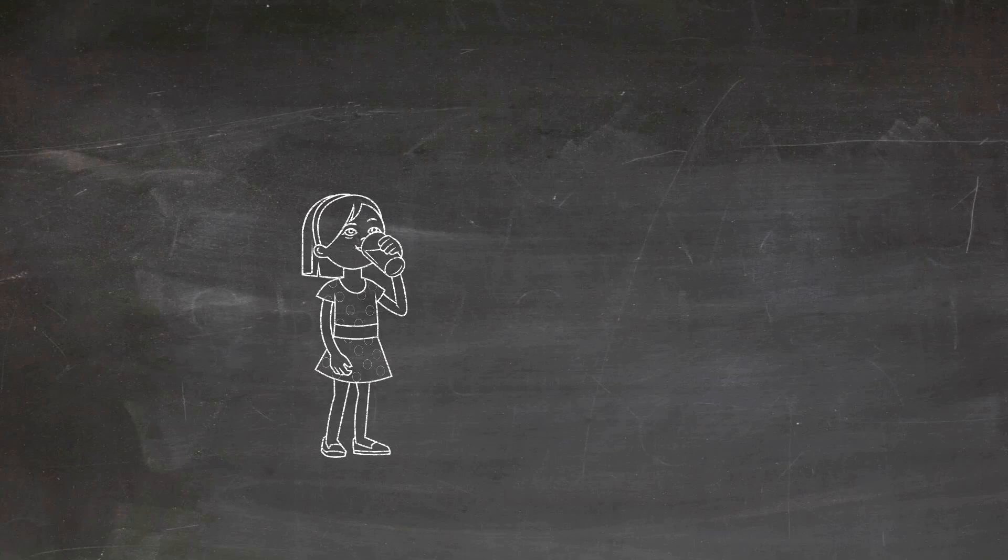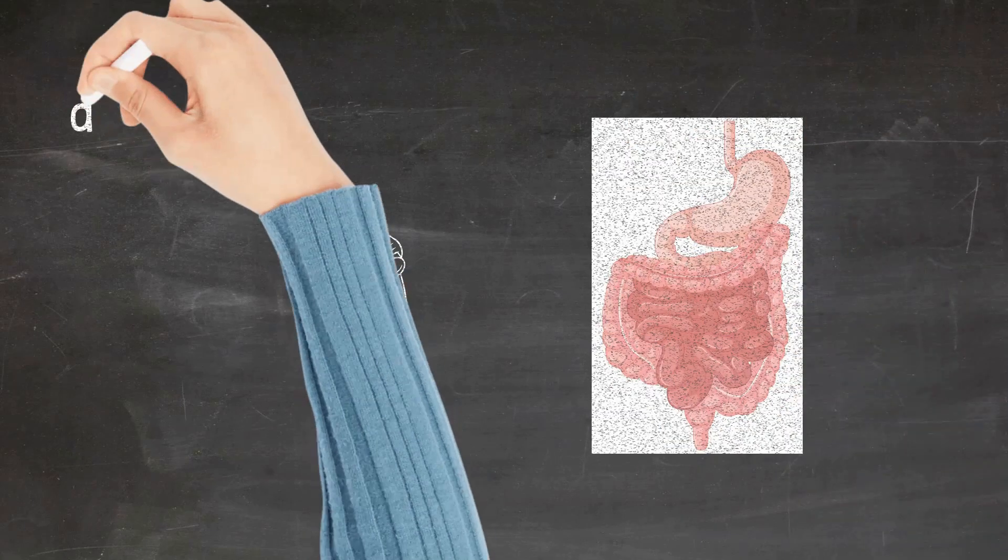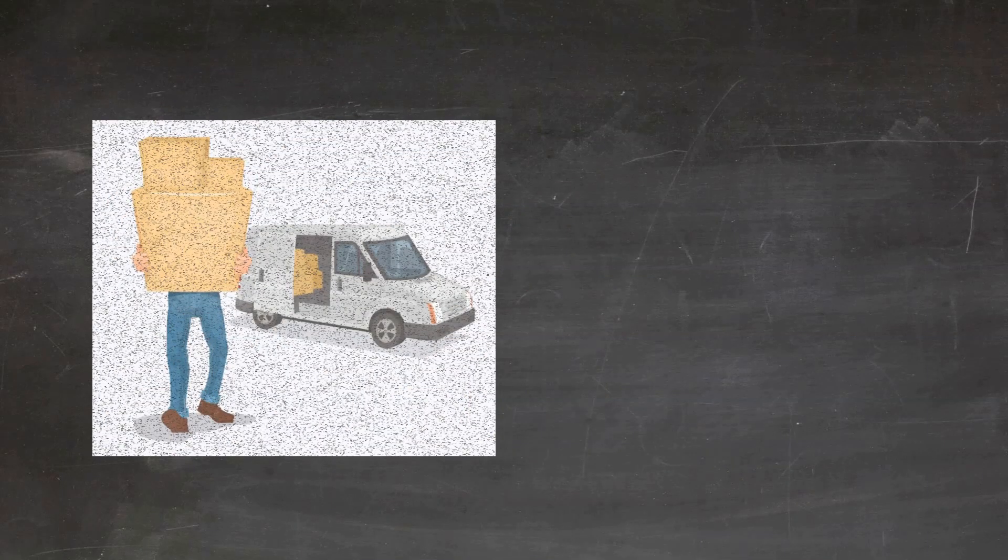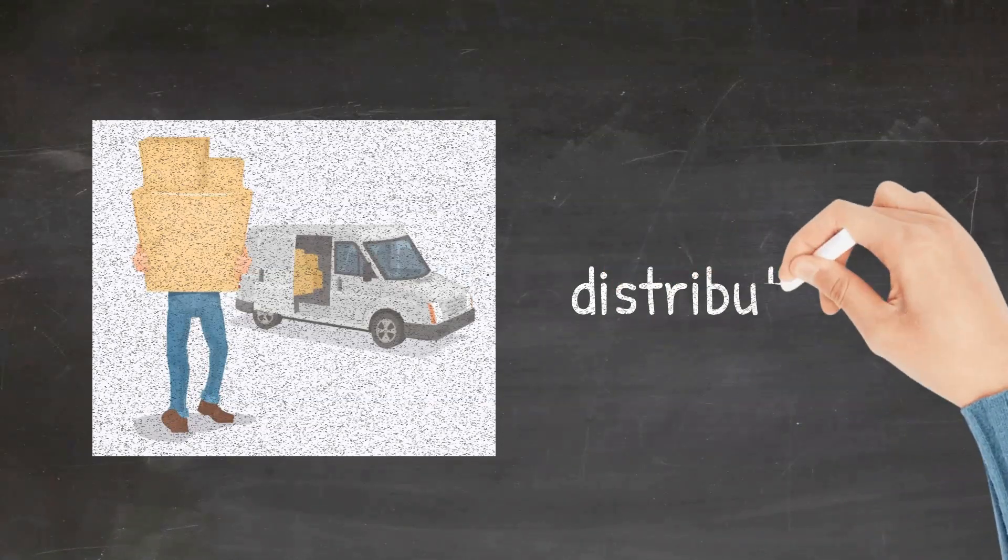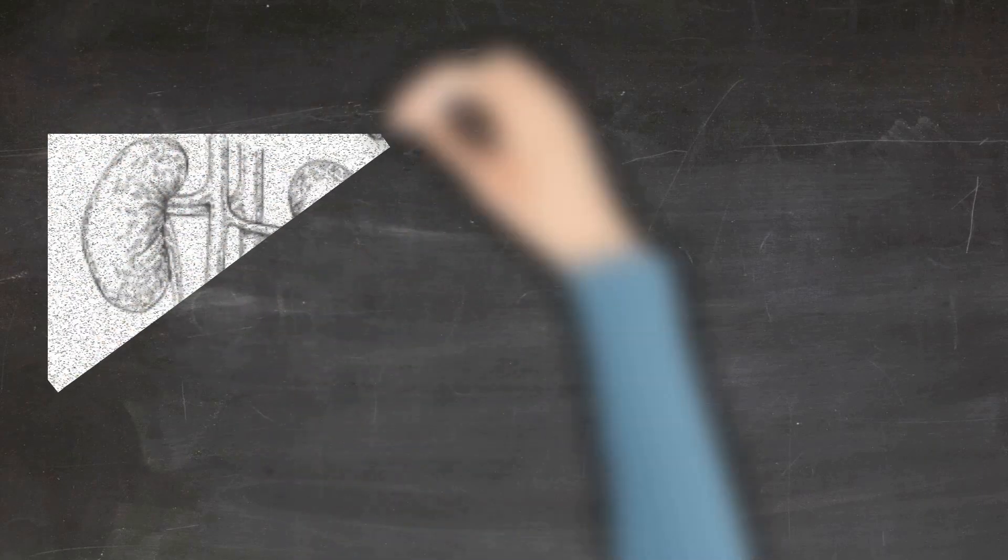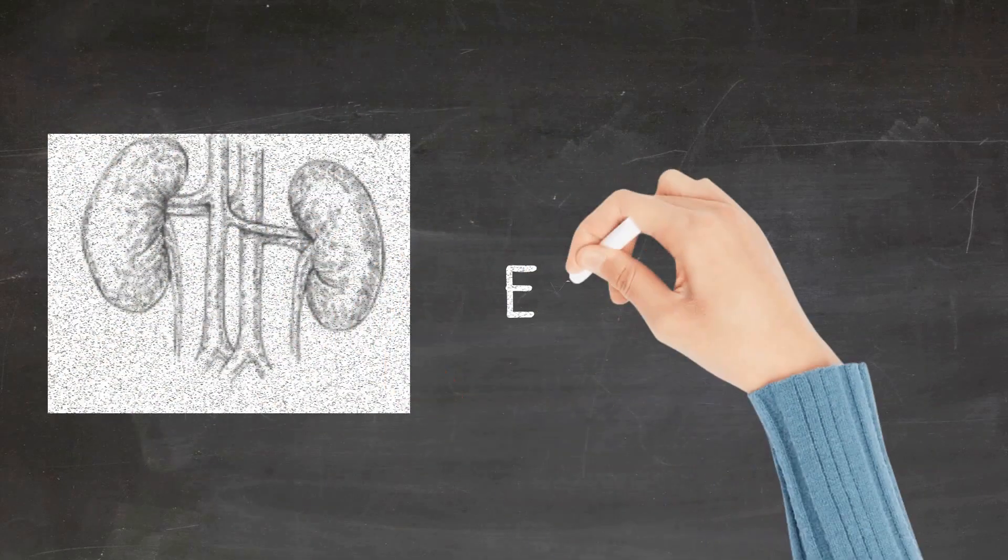Imagine you have a headache and you swallowed a tablet of paracetamol. First this tablet has to reach the gut and from there it has to reach the circulation. This is called absorption. After absorption, the drug is taken to different sites in the body, and this process is called distribution. Once you take a drug, it does not remain in the system forever. Just like food, drug also undergoes metabolism. And after metabolism, finally the drug is excreted.